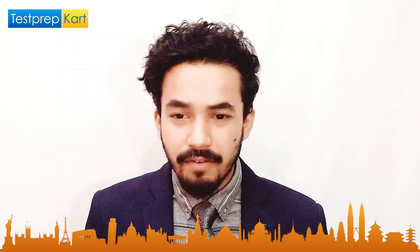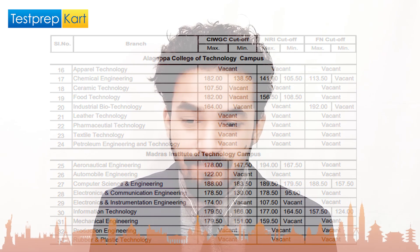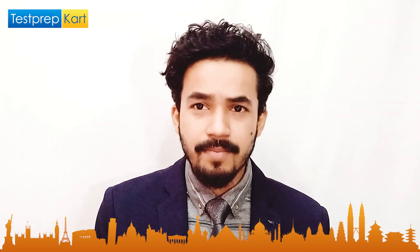Let's discuss two more colleges under Anna University: the ACT campus and MIT, which is Madras Institute of Technology. In Apparel Technology, the CIWGC maximum cutoff was 182 out of 200 and the minimum was 138.5. For NRI students, it was 141 maximum and 105 minimum. For Foreign Nationals, it was 113 maximum and vacant for the minimum. Overall, out of 200, the maximum is around 190 and the minimum is around 107. You should aim to score at least 60%, that is 120 or above.